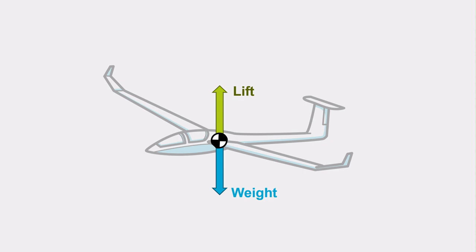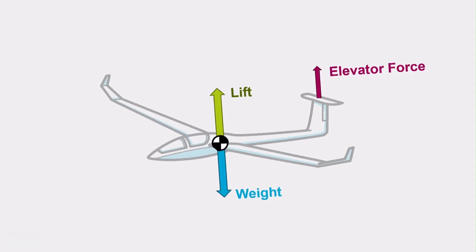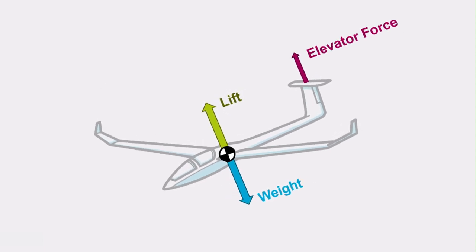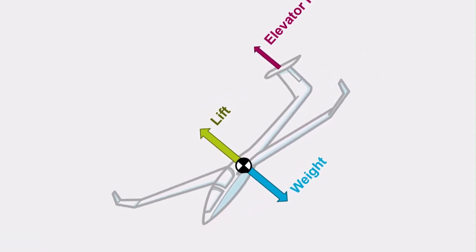But we know an aircraft can also pitch up and down. It achieves this through control surfaces such as the elevator, which generates a force that is not in line with the center of gravity. And this offset force causes the aircraft to rotate about its center of gravity.